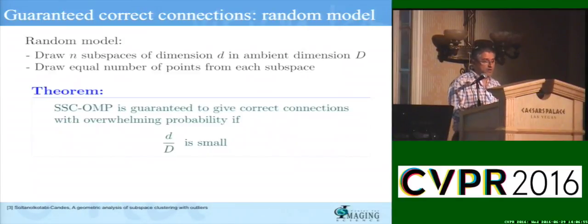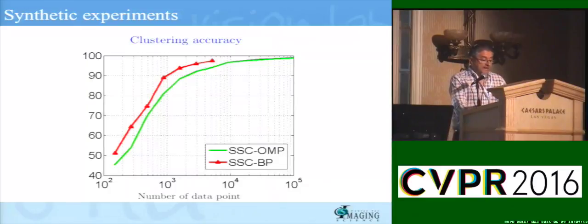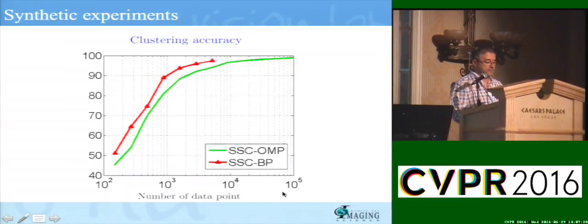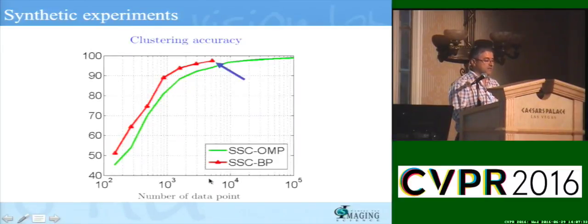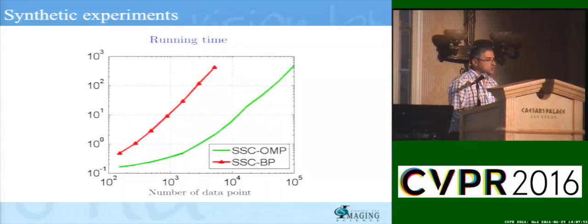The only difference with prior work based on L1 minimization is the probability: we do a little bit worse, and the difference between L1 and OMP is on the order of the dimension of the subspace d divided by the number of data points. In the evaluation, the y-axis is clustering accuracy and the x-axis is the number of data points. The red curve is the accuracy of classical L1 minimization, which stops at about 7,000 data points. Our method does worse by a few percentage points initially, but when we get to about 100,000 data points we do as well or better than L1 minimization, and we do so two orders of magnitude faster.